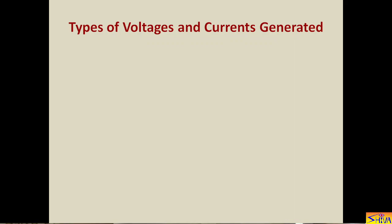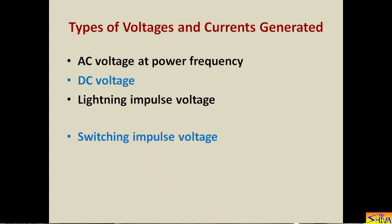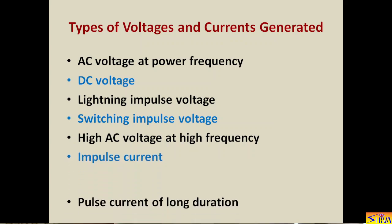Now let us see the types of high voltages and currents generated in the lab. Number one: AC voltage at power frequency. Number two: DC voltage, because nowadays at many places transmission is HVDC. Number three: lightning impulse voltage. Number four: switching impulse voltage. Number five: high AC voltage at high frequency. These are the five different types of voltages generated for testing. For current: impulse current as well as pulse current of long duration — these two types of currents are required to test electrical equipment.